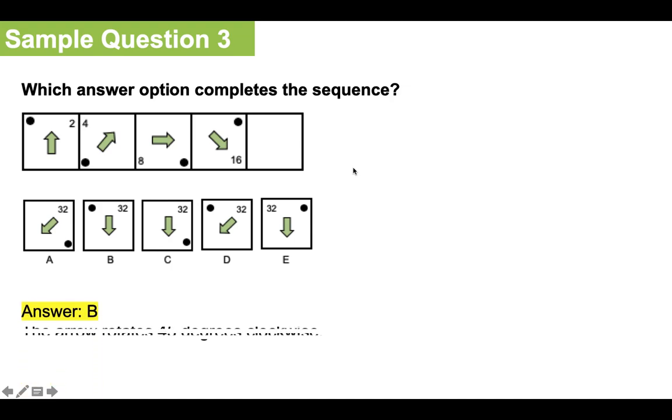And the answer is B. And the reason for that is the arrow each time rotates 45 degrees clockwise. So therefore, it will need to point at the bottom.